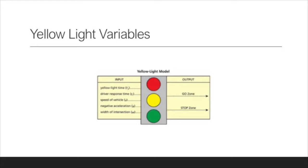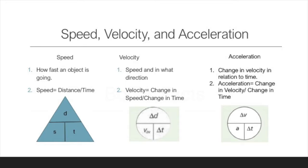There are many variables that come into play when calculating the go zone and stop zone: yellow light time, human response time, speed, negative acceleration rate, and width of the intersection.